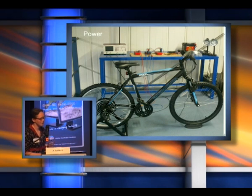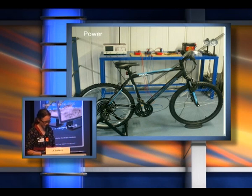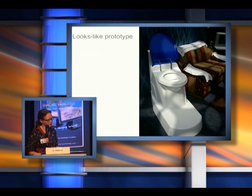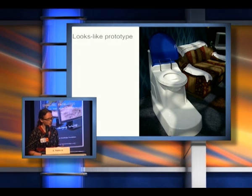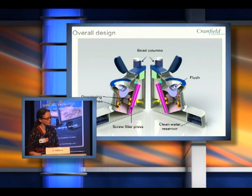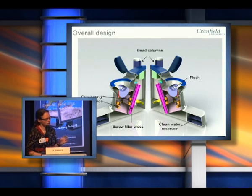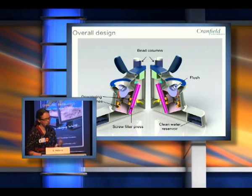The condition was that it had to be an aspirational toilet, so it was a real pleasure in this project to work with our design colleagues at Cranfield University. This is the toilet that they designed for us, which we think is a really aspirational product that people will really want to have in their houses. Of course, it was critical that all these components fitted into this toilet. You can see how everything fits together: the dewatering membranes are in orange, the screw in pink, the flush mechanism, the bead columns at the back of the toilet, and the clean water reservoir at the front where the water is collected.